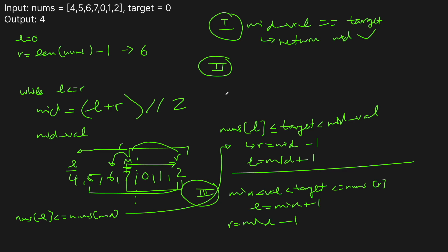If this seems confusing, don't worry — when we go to the actual code editor we'll type it out line by line and it should be much clearer. One thing to note: if we don't find the target within the while loop, we return -1 because it's not in the array. Let's go to the code editor and type out all of these cases.